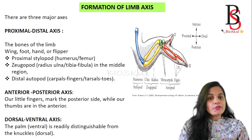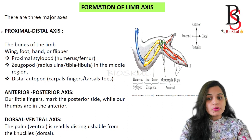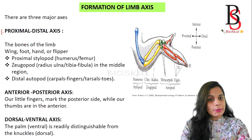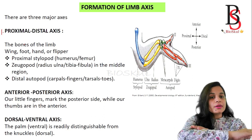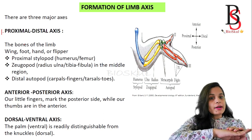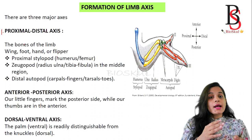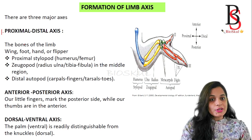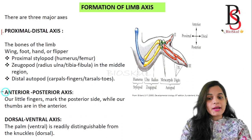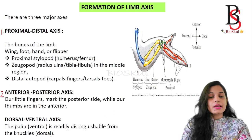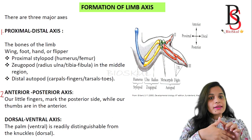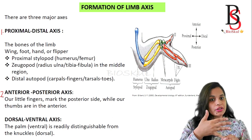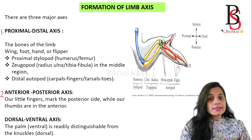We know that tetrapods have three major limb axes. The first is the proximal-distal axis, which is divided into three parts: the proximal end known as the stylopod, the middle part known as the zeugopod, and the distal part known as the autopod. The formation of the proximal-distal limb axis is regulated by the fibroblast growth factor family of proteins. The second limb axis is the anterior-posterior axis, where the thumb marks the anterior end and the little finger marks the posterior end. Its formation is regulated by the sonic hedgehog protein.